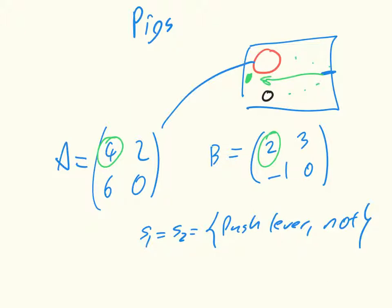If the dominant pig pushes the lever - so we're in the first row - the dominant pig goes to push the lever, and the subservient pig eats a fair bit of the food before being pushed out of the way.